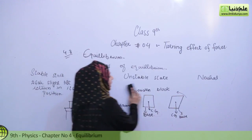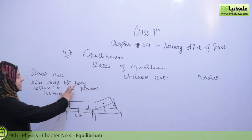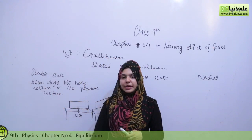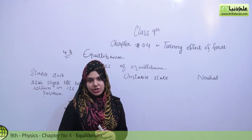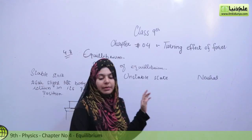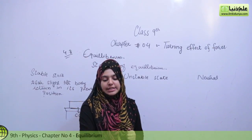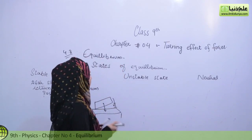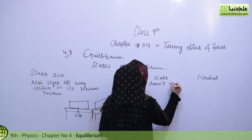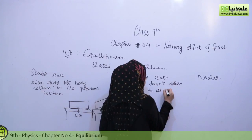Now let's look at the unstable state. In the stable equilibrium, the body slightly tilted and returned to its previous position. But in unstable equilibrium, the body does not return to its previous position. The definition is: if a body does not return back to its previous position when set free after a slight tilt, then it is said to be in unstable equilibrium.